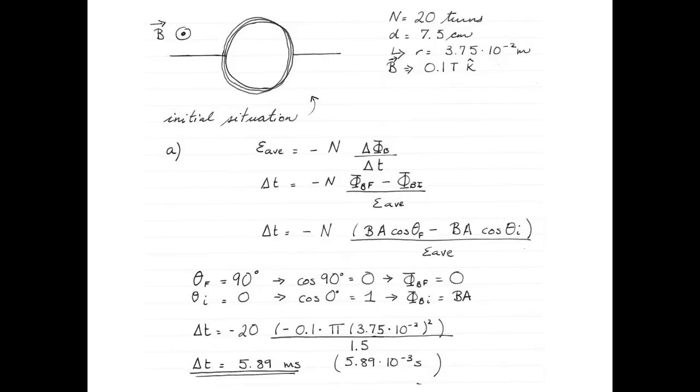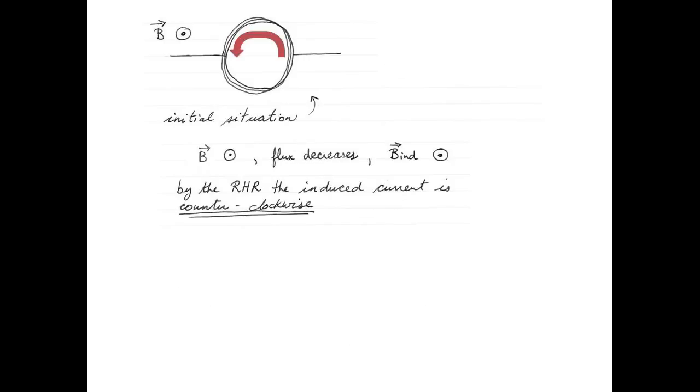To find the induced current, we use Lenz's law. The external magnetic field points out of the page. The flux decreases. The induced EMF, which opposes the change, must therefore point in the same direction, that is, out of the page.